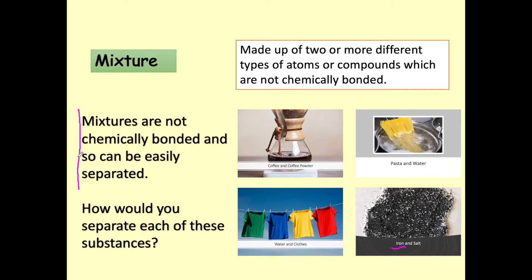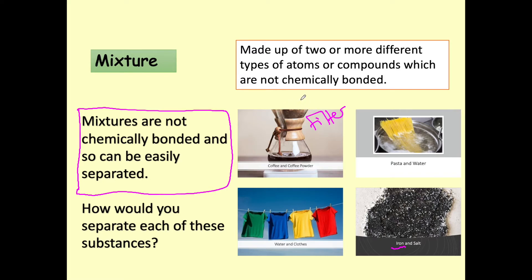The key definition here is that the substances in a mixture are not chemically bonded and therefore can be easily separated. With coffee and coffee powder, we would filter it — the insoluble coffee powder stays in the paper whilst the coffee solution filters through. Pasta and water is similar to filtration but we use a sieve or colander to retain the pasta and remove the water. With water and salt, it's evaporation. And iron is magnetic, so we could use a magnet to remove iron from salt.